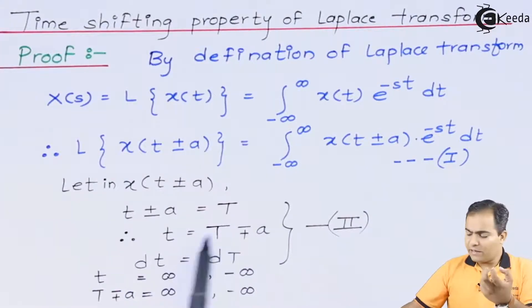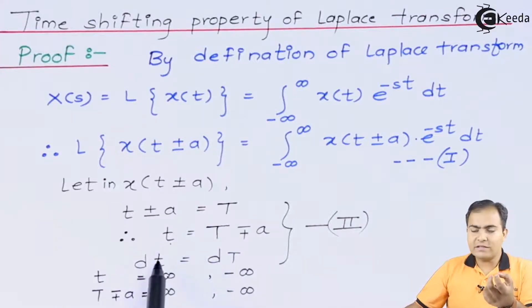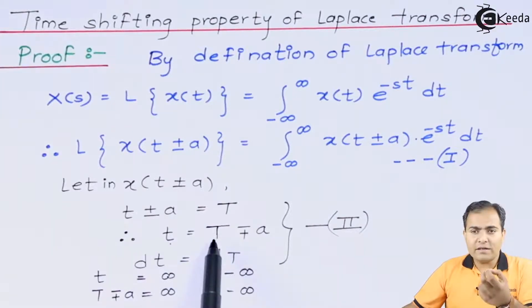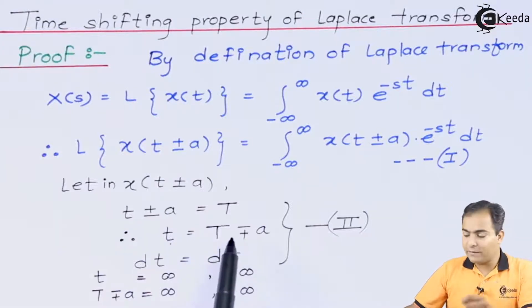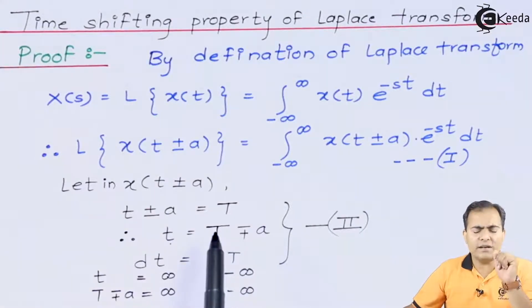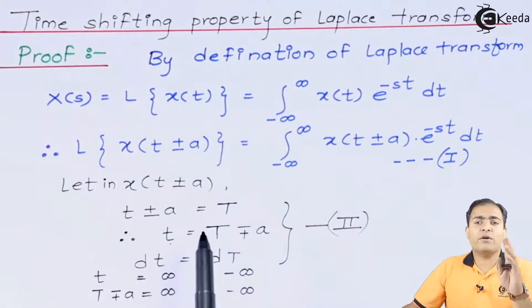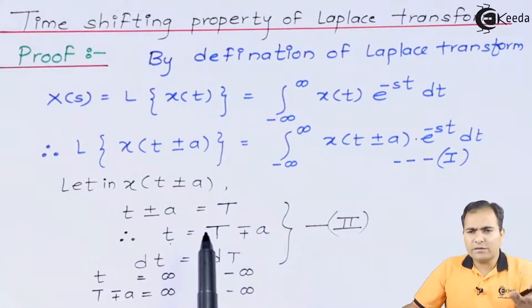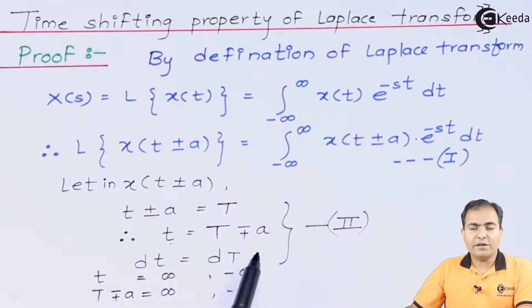We know that the differentiation of variable t is dt, and for capital T the differentiation is dT. Now 'a' is an integer value or a constant, and the differentiation of a constant is always zero, so that's why it does not appear — we only have dT.